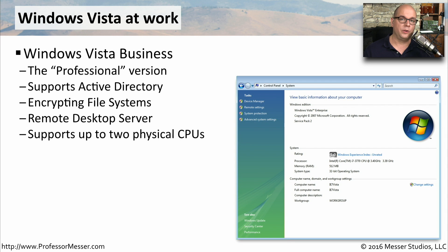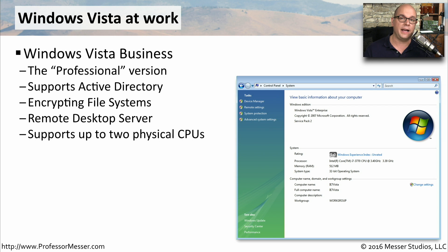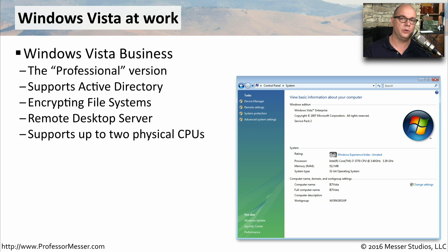If you have Windows Vista at work, there are probably two different editions that you might be using. One is Windows Vista Business, which is the professional version of Windows Vista. It supports Active Directory infrastructure, encrypting file systems so you can encrypt individual files on your computer, remote desktop so that you can remote desktop into your business computer, and it supports up to two physical CPUs.